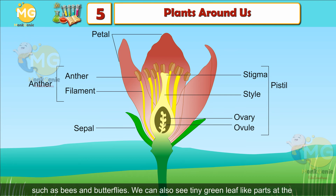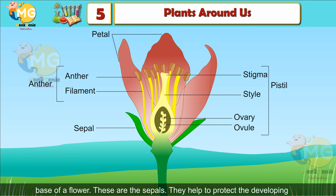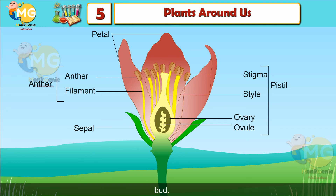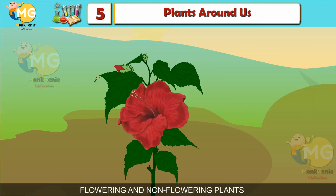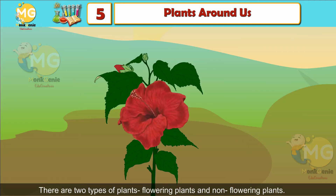Petals are important parts of the flower; they help attract pollinators such as bees and butterflies. At the base of a flower are tiny green leaf-like parts called sepals, which help to protect the developing flower.